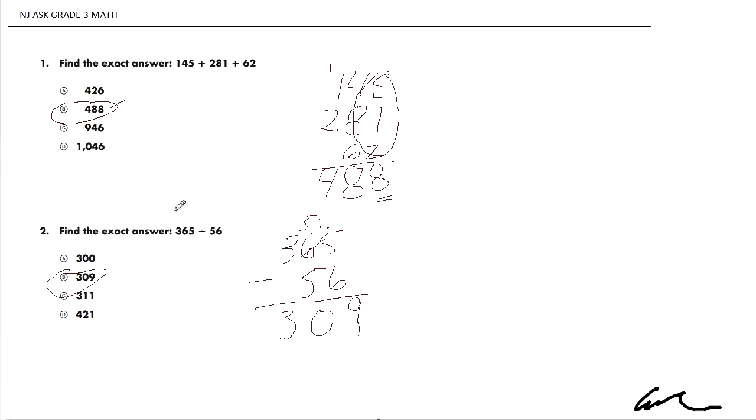Now, one of the things that we can quickly do, just to make sure we got the answer correctly, is go 309 plus 56. That should give us the answer 365.